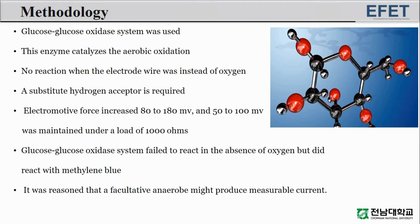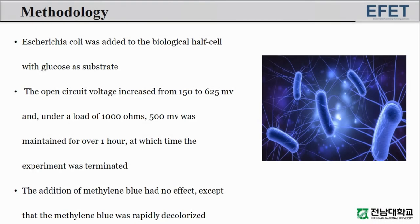It was reasoned that a facultative anaerobe might produce measurable current. Escherichia coli was added to the biological half cell with glucose as substrate. The open circuit voltage increased from 150 to 625 millivolts, and under a load of 1000 ohms, 500 millivolts was maintained for over one hour, at which time the experiment was terminated. The addition of methylene blue had no effect, except that the methylene blue was rapidly decolorized.